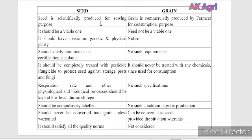Seed is scientifically produced for the sowing purpose, whereas grain is commercially produced by the farmers for the consumption purpose. Seed should be viable, whereas in grain it need not be viable. Seed should have maximum genetic and physical purity — that is not so in case of grain. Seed should satisfy minimum seed certification standards, whereas grain has no such requirements. Seed should be completely treated with pesticides or fungicides to protect against storage pests and diseases, whereas grain should never be treated with any chemicals since it is used for consumption purpose.